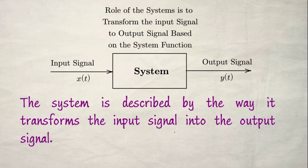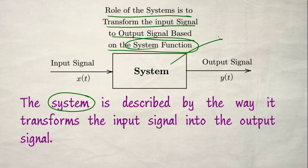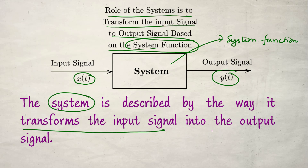There is another definition: a system is described by the way it transforms the input signal into an output signal. The role of the system is to transform the input signal to the output signal based on the system function. The system function is a mathematical function implemented as hardware, software, or a mechanical system inside this black box, enabling it to process the input signal and produce the output signal.